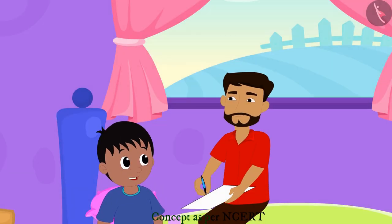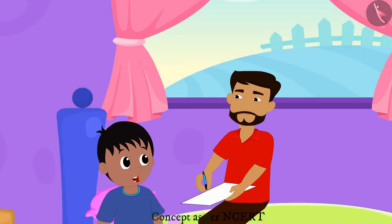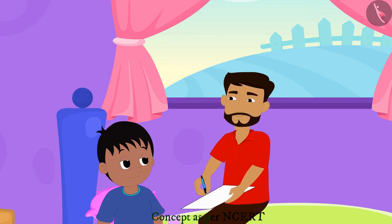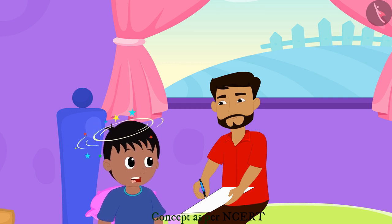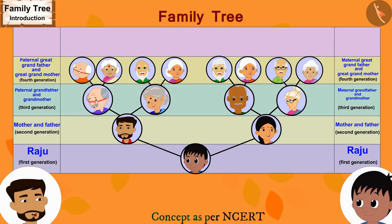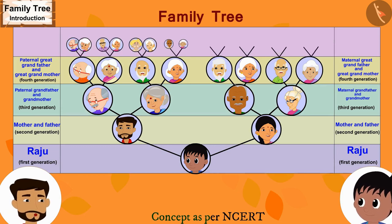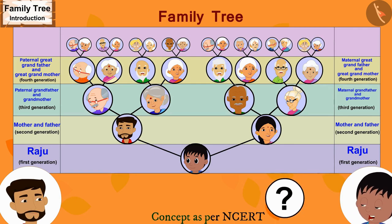Raju thinks all people have now been added, but again his father says no. Yet another generation needs to be added: the grandparents of both the maternal grandfather, maternal grandmother, paternal grandfather, and paternal grandmother. Raju is now thoroughly confused, but his father says he will quickly add them to the family tree.